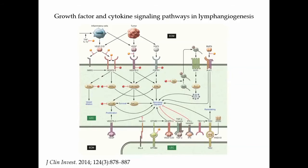Lymphangiogenesis is complicated and is not just based on one ligand and one receptor, although that particular ligand-receptor combination is the most potent and most important one in the cascade. In other disease states — in neoplasia, in inflammation — others of these mechanisms will be invoked in order to create the neo-lymphangiogenesis that can occur in those other disease states.